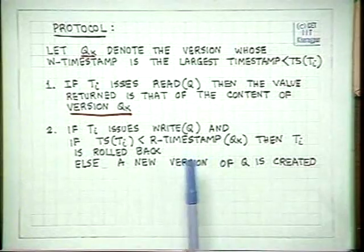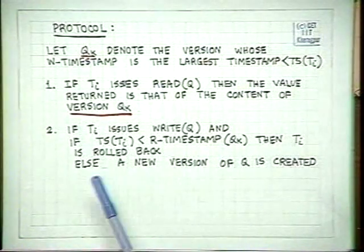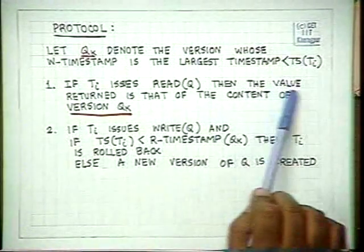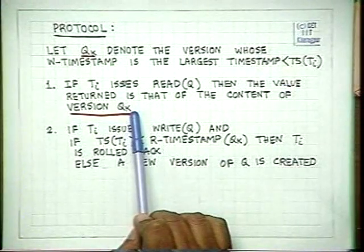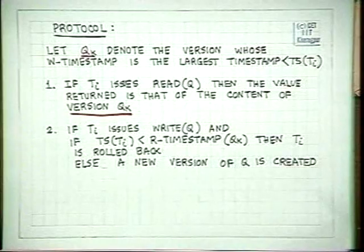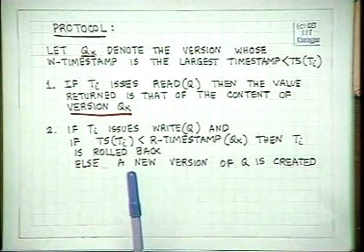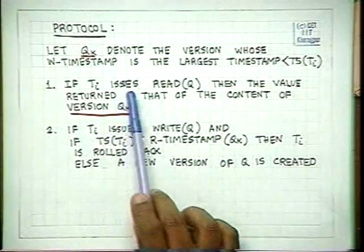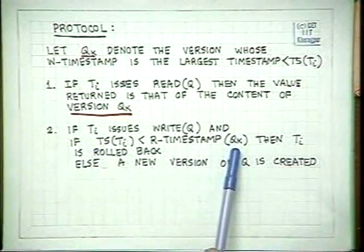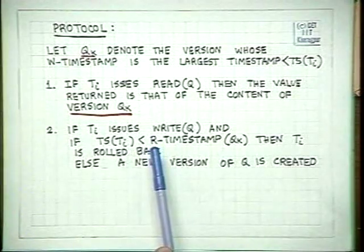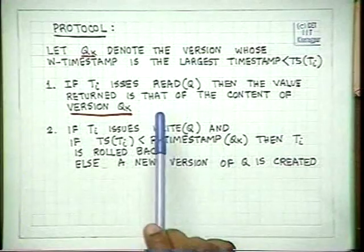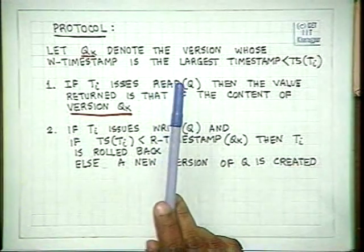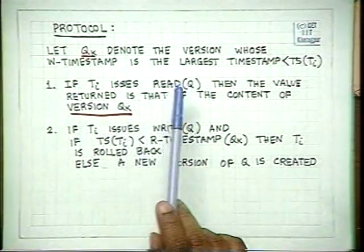In this multiversion protocol, there is no failure on a read. On a write, failure occurs under only one condition, whereas previously on write there were failures under two conditions and on read under one condition. So we minimize the number of rollbacks. Obviously, in a multiversion scheme there is additional overhead of maintaining all versions — space and other problems arise — but it does enhance concurrency when working on a small set of data.